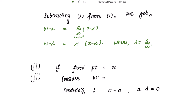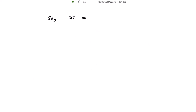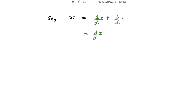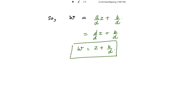For the second case — determining the bilinear transformation when infinity is the only fixed point — the condition is C = 0 and A − D = 0, that is A = D. Putting C = 0 into the transformation gives w = (A/D)z + B/D. Since A = D, this simplifies to w = z + B/D. This kind of transformation is a translation transformation.